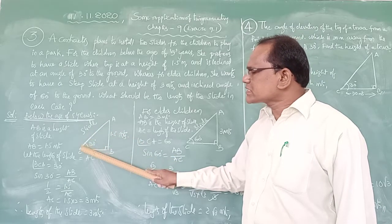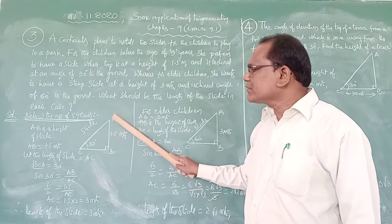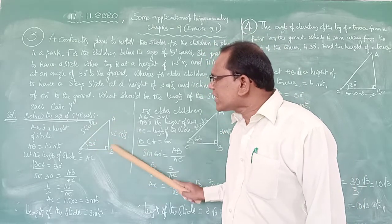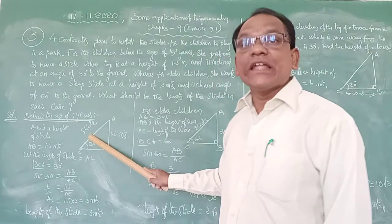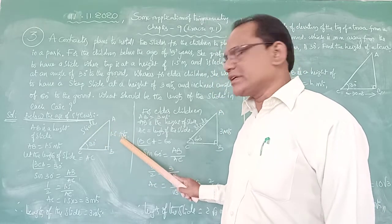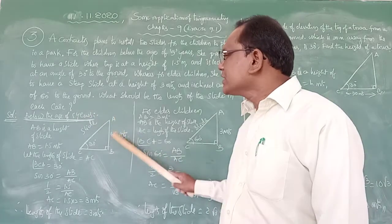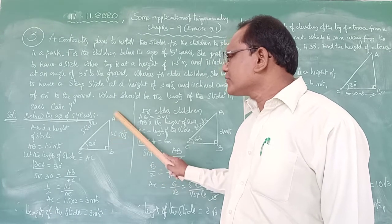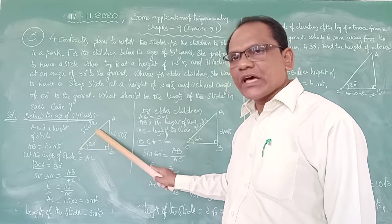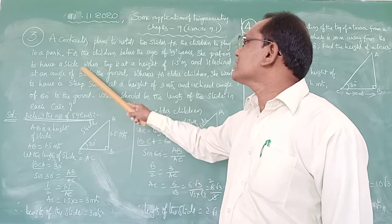In our diagram, AB is the height of the slide and AC is the length of the slide. The length of the slide is different from the height of the slide. The height AB is given as 1.5 meters for children below age 5 years. AC — the length of the slide — is what we have to find. This slide makes an angle of 30 degrees to the ground, as given in the problem.